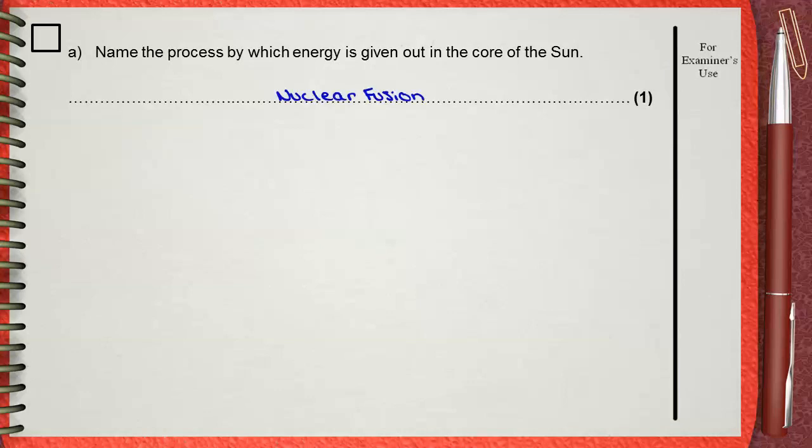It's important to distinguish between two nuclear reactions, nuclear fission and nuclear fusion. Nuclear fission is that for nuclear power stations, but nuclear fusion is the reaction in the core of the Sun.